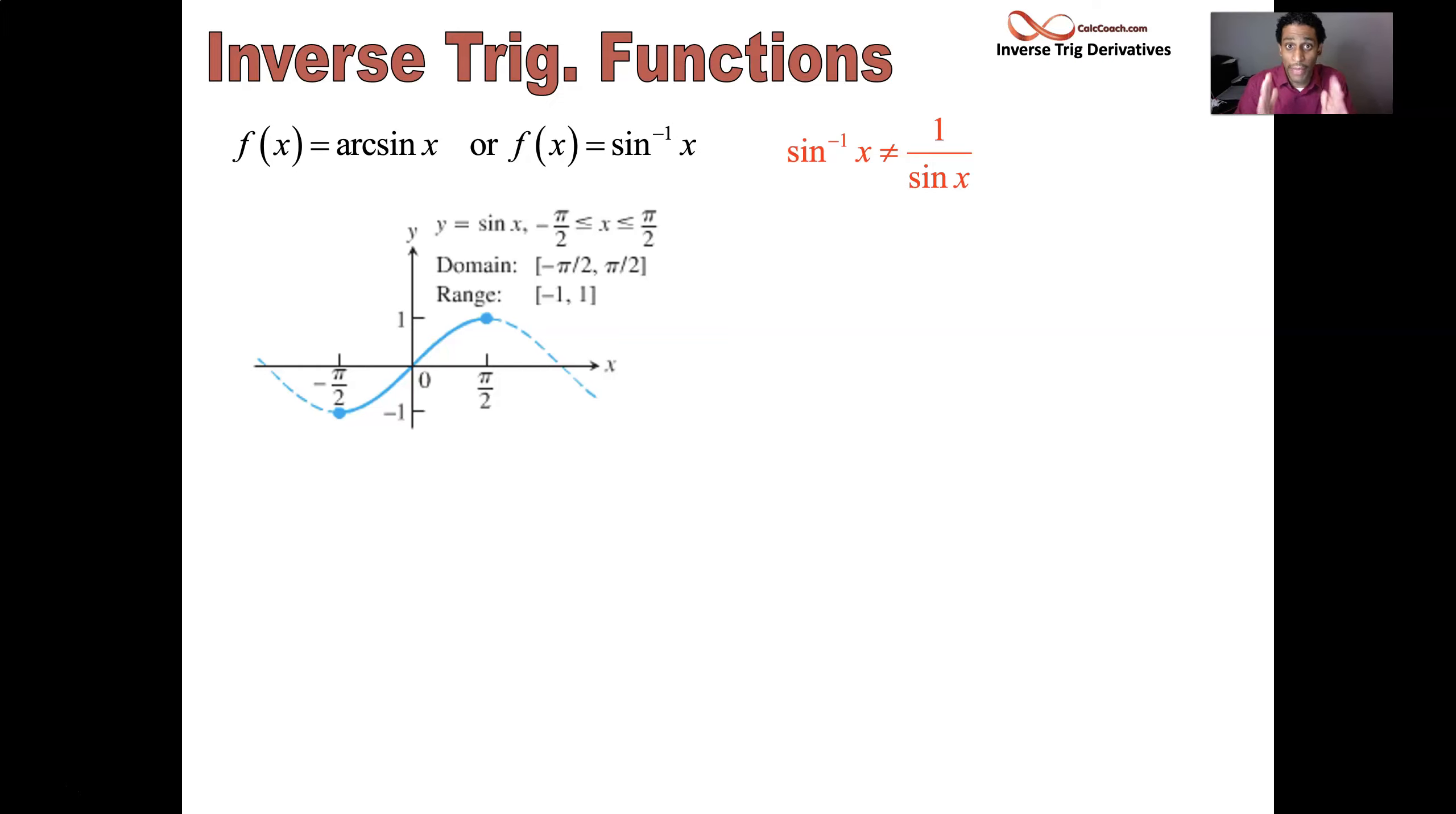So what you have to do is restrict the domain. Only look at a certain interval of x values where you'll pass the horizontal line test and the vertical line test. By convention, we've decided that the part that you should look at is minus π/2 to π/2. That way, we all have the same answers. So only use these angles. No other angles can be used as the input to sine, and therefore the output to arc sine.